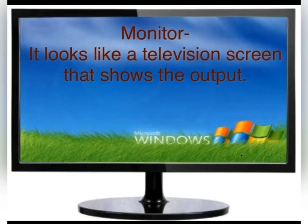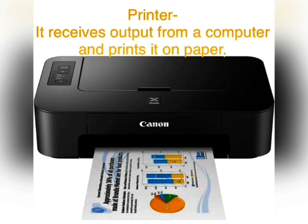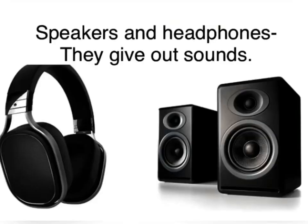Number 1: Monitor. Monitor is an output device. It looks like a television screen that shows the output, meaning it shows the result. Printer: Printer is also an output device. It receives output from a computer and prints it on paper.